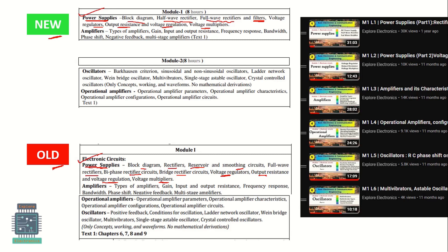However, in the old syllabus, Module 1 contained extra topics: operational amplifiers and oscillators. In the new syllabus, these are moved to Module 2. You can see oscillators and then operational amplifiers now appear in Module 2 instead of Module 1.